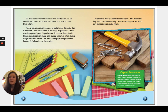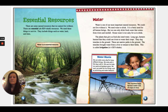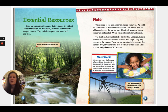Even plastic things such as pens are made from natural resources. Most plastic things are made from oil. We do not need paper and pens to live, but they do help make our lives easier. Sometimes people waste natural resources — this means that they do not use them carefully. If we keep doing this, we will not have these resources in the future. There are some natural resources that we cannot live without. These are called essential resources — we need these things to survive. They include things such as water, land, and trees.